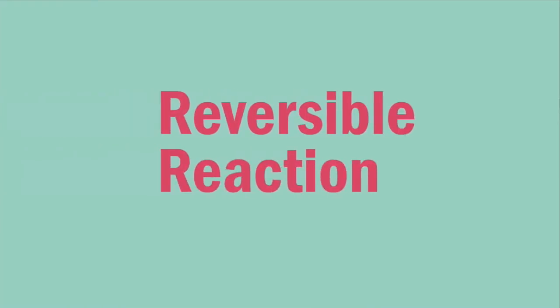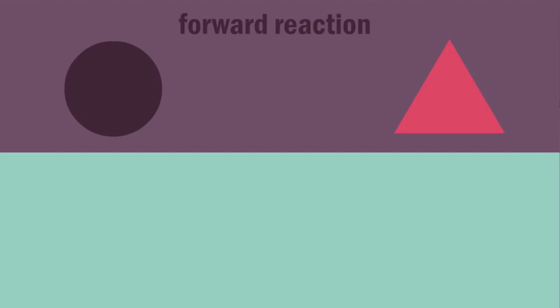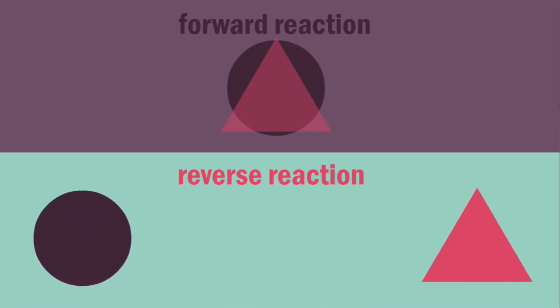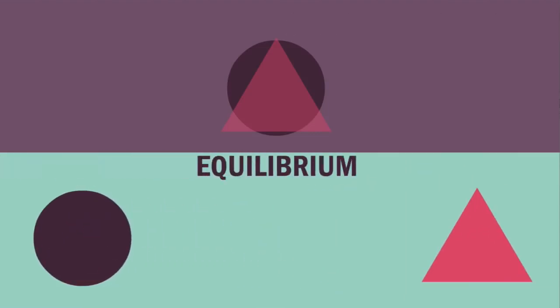The same concept can be applied to a reversible reaction. If the rate of the forward reaction, reactants to products, is the same as the reverse reaction, products to reactants, the reaction is said to be at equilibrium.